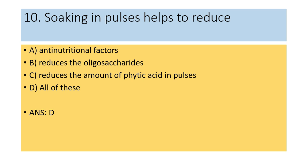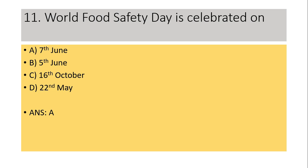Eleventh question: World Food Safety Day is celebrated on 7th June, 5th June, 16th October, or 22nd May? Answer is A: 7th June. 16th October is World Food Day; 5th June is Environment Day; 22nd May is International Biodiversity Day.